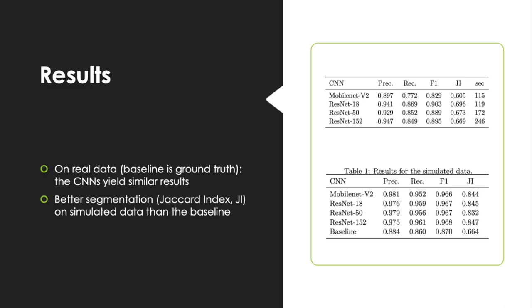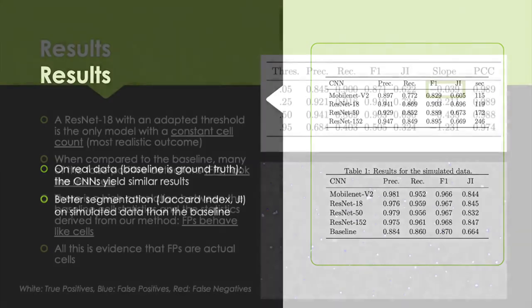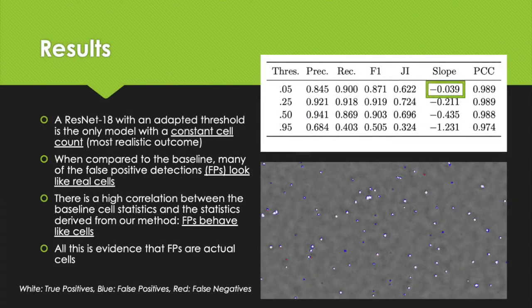Finally, we did further experiments with the ResNet-18 since it performed well while being very fast. We investigated how using different thresholds on the softmax output of the ResNet-18 can alter the cell detections. Using a low threshold yields a constant number of cells over time, indicated by the slope value in the table.